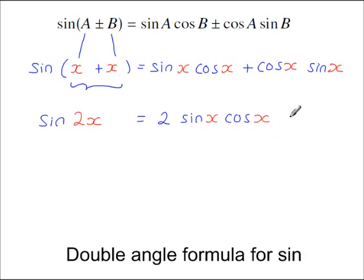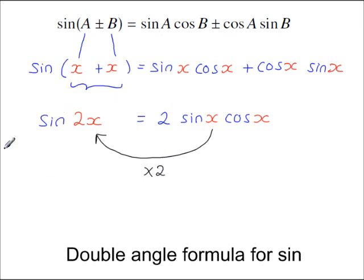Simplifying, x plus x gives sine 2x. What you have is a double angle formula for sine. The angle on the right-hand side is x; take that angle and double it to get the angle on the left. This is a very useful identity that can be used to solve many equations you will find in exam papers.